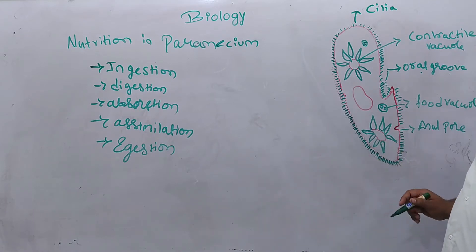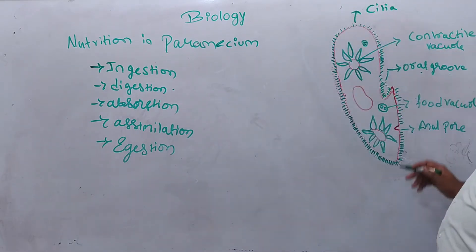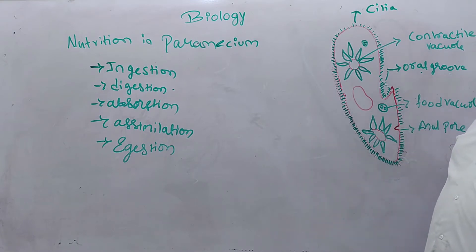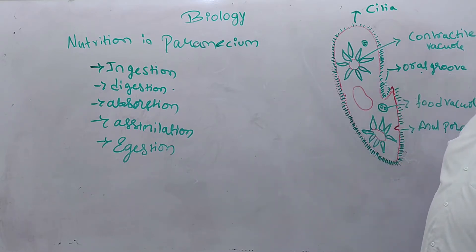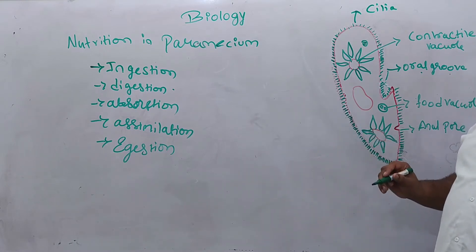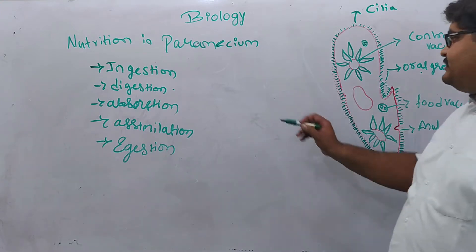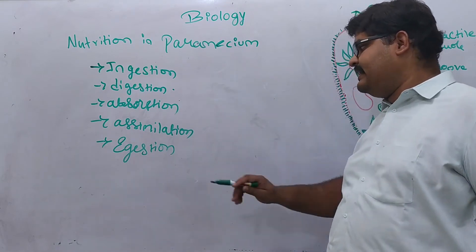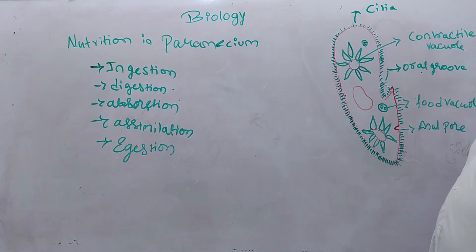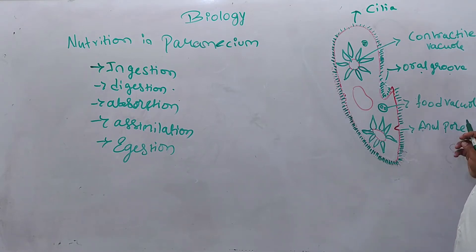Through the oral groove, ingestion of the food material takes place. Digestion in Paramecium is carried out in a particular vacuole known as the food vacuole, where thorough digestion of all food material takes place. Then the nutrients are diffused out into the cytoplasm, and assimilation of these nutrients takes place for energy synthesis.